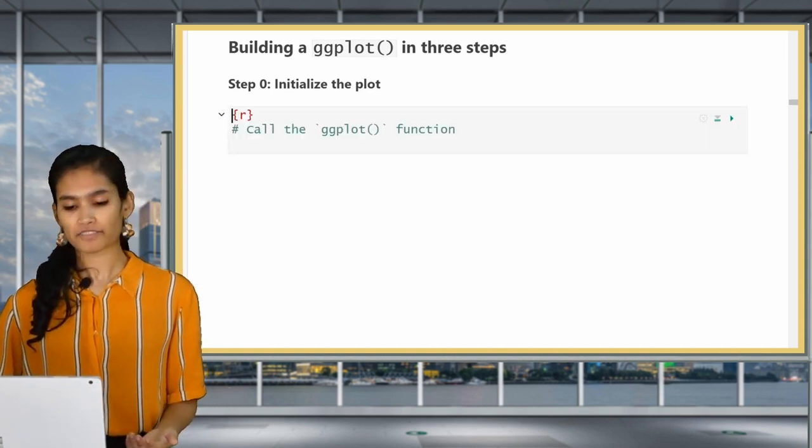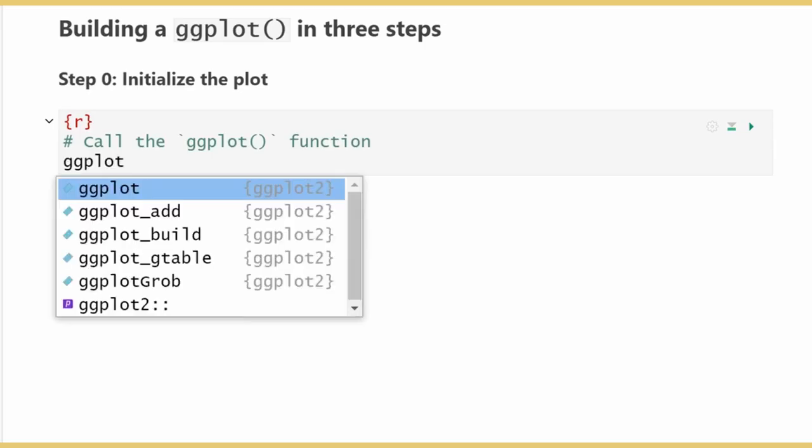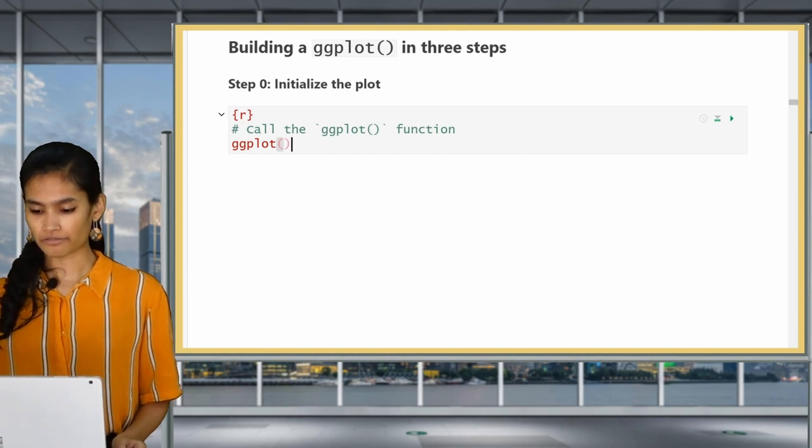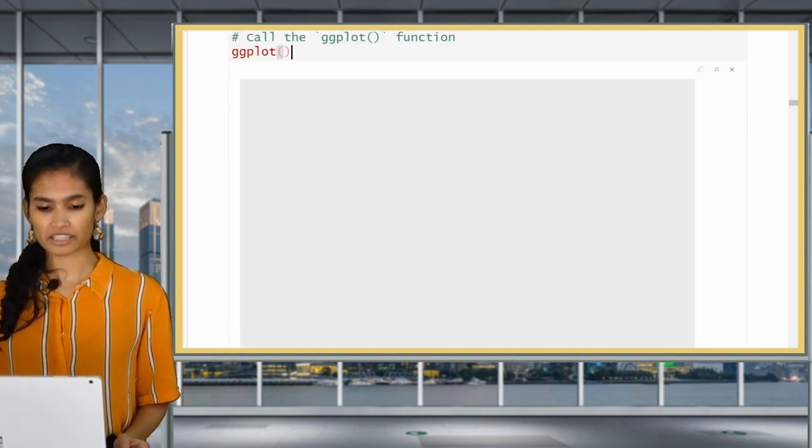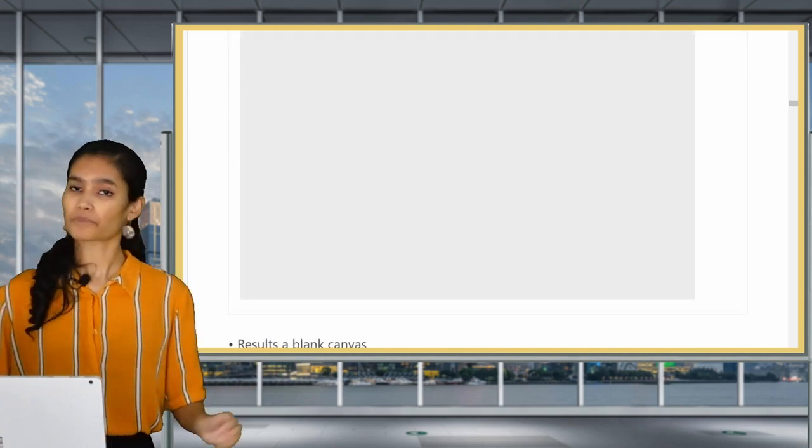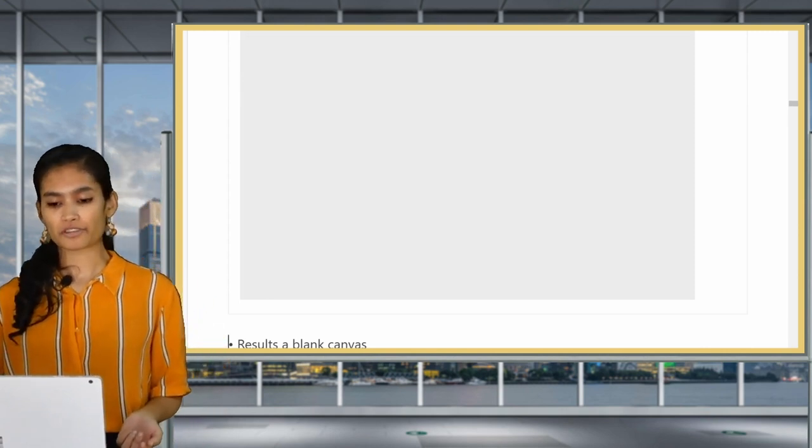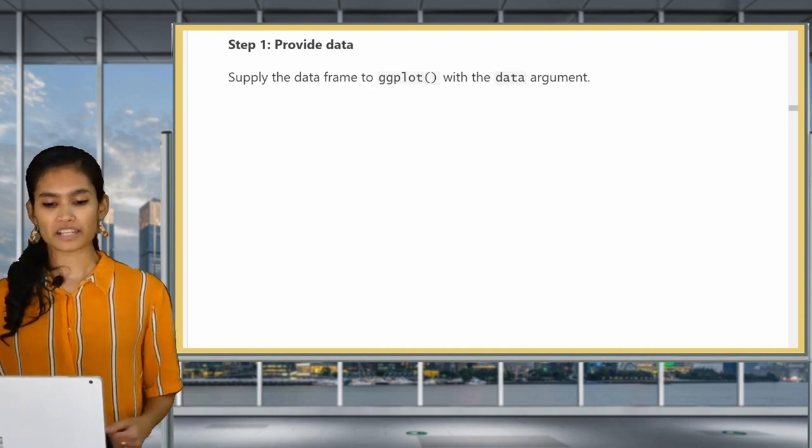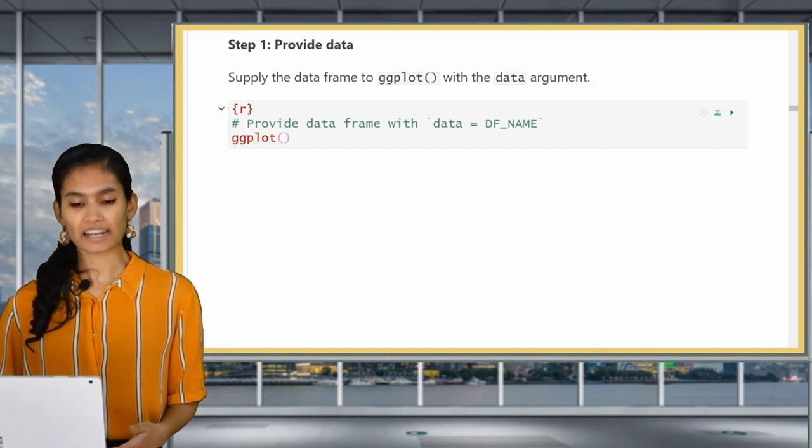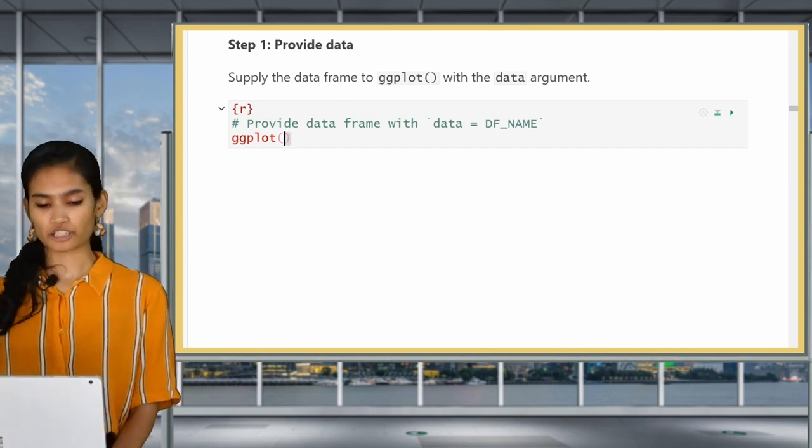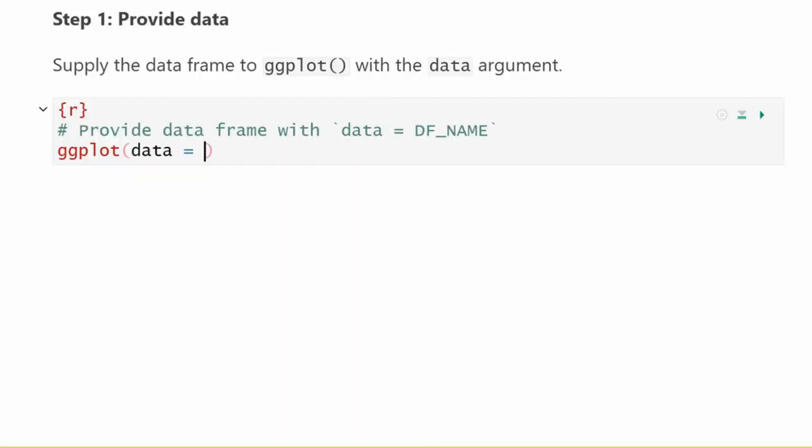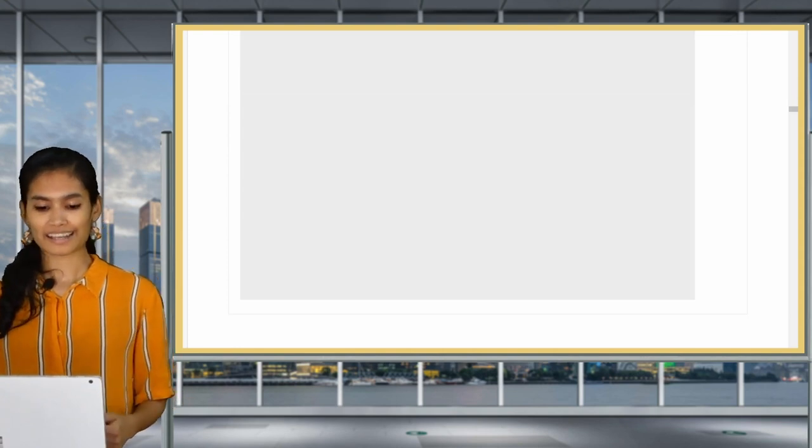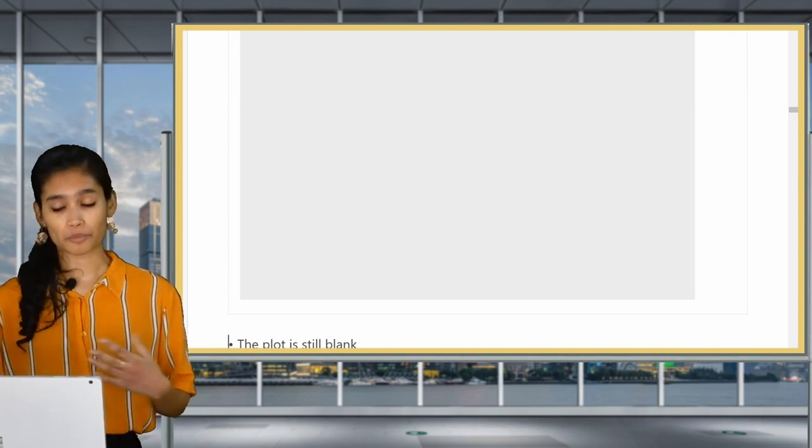Before getting to the first step, we're just going to initialize the plot. We do this by calling the ggplot function by simply typing in ggplot and adding the brackets after. Note that there is no 2 after the ggplot function. ggplot2 is the name of the package, not the function. Now if you run this code, you'll see that it simply results in a blank canvas. But not to worry, we haven't added any of our three essential elements yet, so let's get to the first of our three steps, which is to add the data. We supply the data frame to ggplot using the data argument.